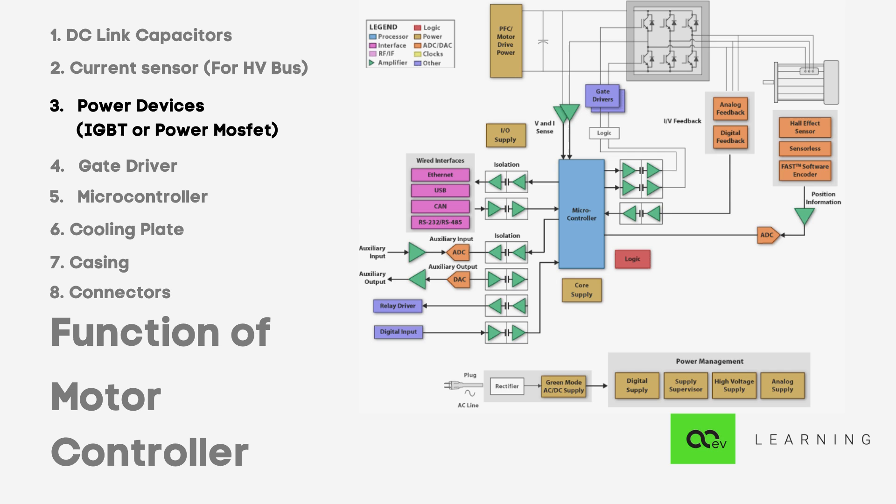Now, consider if one of them fails due to any common failure mode like current imbalance caused because of dissimilar RDS on or any other failure mechanism. It leads to an open circuit. Now, the load is going to pull the same current and the other branches will have to bear the brunt and share the current. If they are not sufficiently rated, it might lead to collapse of the entire array. The sufficiently oversized switches were required to be used.